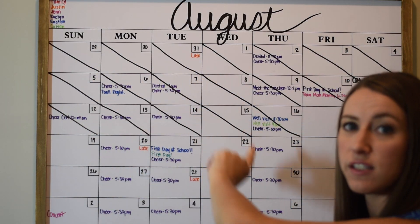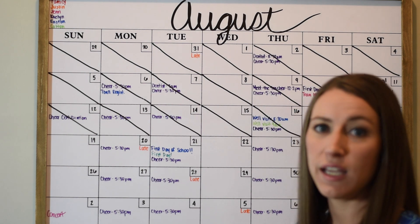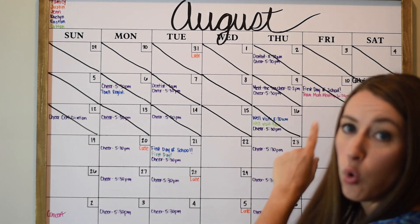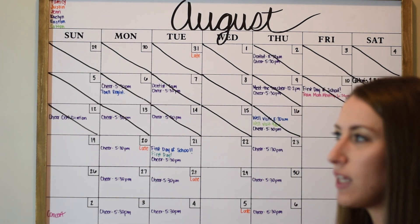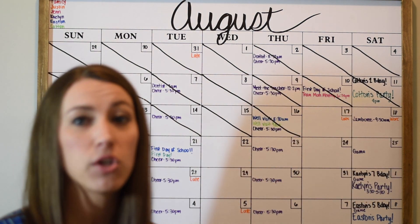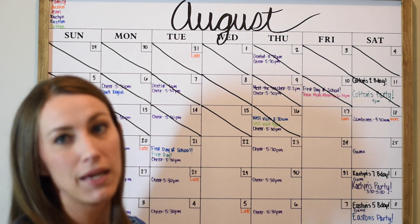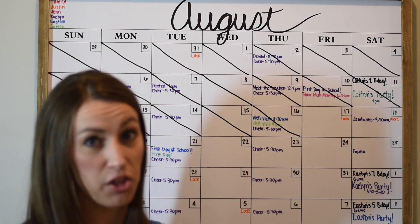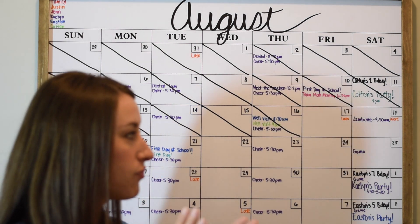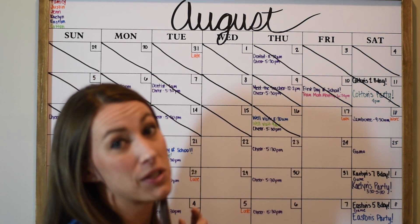I cross off the days as they're completed. I just feel like it helps everyone keep up with what day it is and how many days of the month are left — especially the younger ones. It helps them know what day it is and what we have going on. So the calendar is the most important thing for our Family Command Center. It's all about color coding and getting everyone's information, activities, schedules, and meetings up there in each person's color.